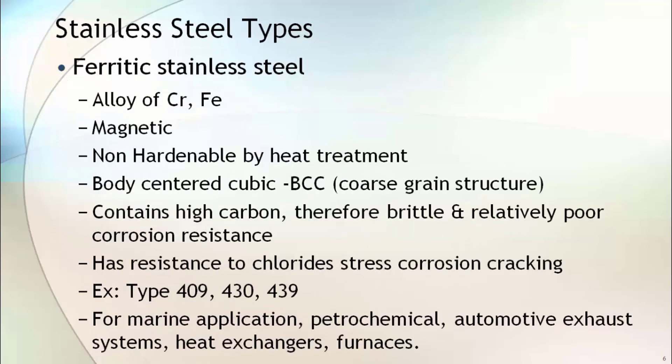Ferritic stainless steel is magnetic in nature and contains higher carbon compared to austenitic stainless steel. It has resistance to chloride stress corrosion cracking, so it is used in applications where this kind of environment is present, such as marine applications, petrochemical, heat exchanger, and furnace applications. Type 409, 430, and 439 are examples of ferritic stainless steel.